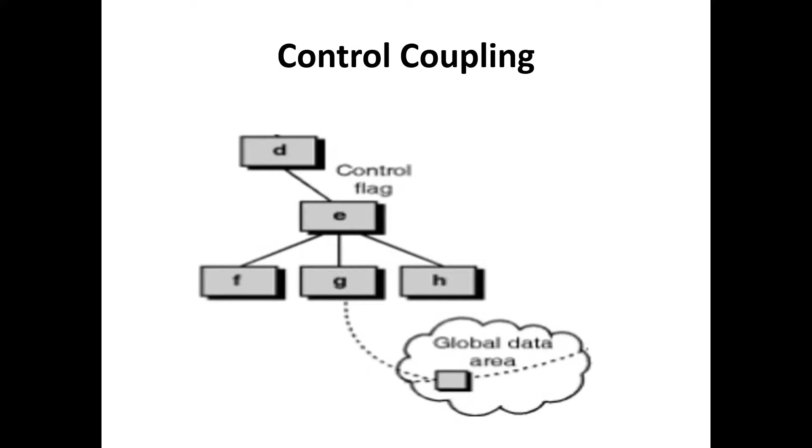Control coupling. Two modules are called control coupled if one of them decides the function of the other module or change in its flow of execution.